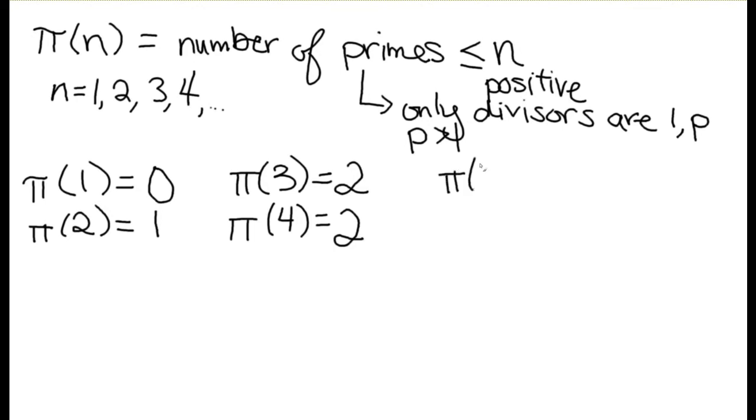If we think about pi of 5, pi of 6, well for pi of 5, the primes less than or equal to 5 are 2, 3, and 5, so that's 3 of them. The primes less than or equal to 6 are also 2, 3, and 5, so that's the same 3.